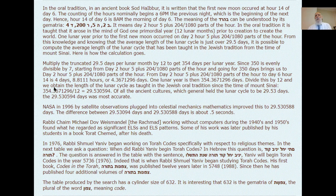Divide 354.3671296 by 12, and we obtain the length of the lunar cycle as taught in the Jewish oral tradition since the time of Mount Sinai: 29.53564 days per month. All the ancient cultures generally held the lunar cycle to be 29.523 days. The value 29.530594 days was most accurate. NASA, in 1996, using satellite observation and celestial mechanics, improved this to 29.530588 days.